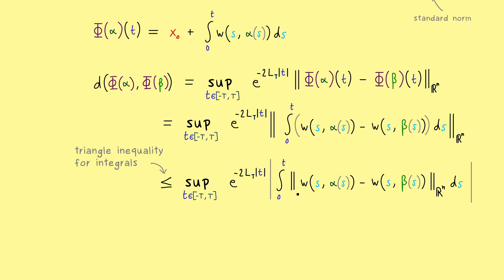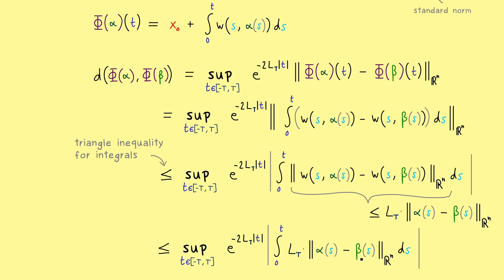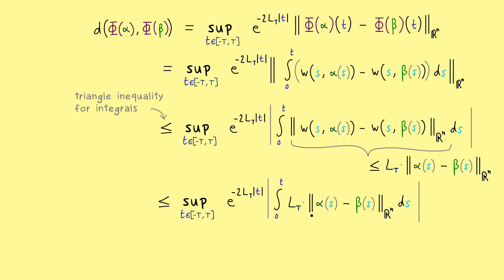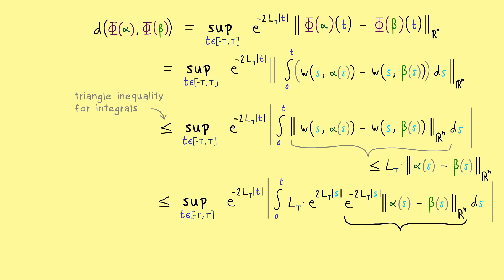Inside the integral we have the difference of the w's, so we apply the global Lipschitz condition — which holds for all points in Rⁿ, and thus for α(s) and β(s). Now we introduce the original metric between α and β by multiplying and dividing by e^{2L_T|s|}: we get e^{-2L_T|s|} times the norm of α(s) minus β(s), multiplied by e^{2L_T|s|}. The supremum of the first part is exactly our distance D(α, β), so this whole expression is less than or equal to D(α, β).